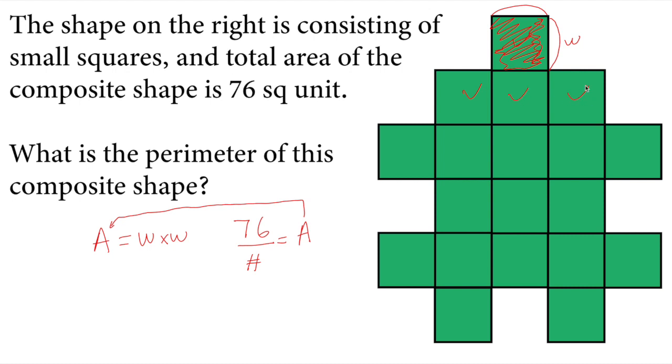1, 2, 3... 18, 19. We have 19 squares. That means 76 divided by 19 equals 4, and that equals the area of a single square. So the area of this single square is 4.